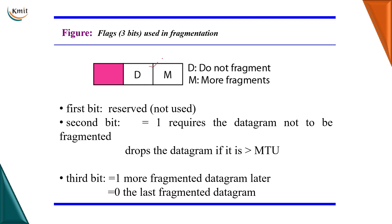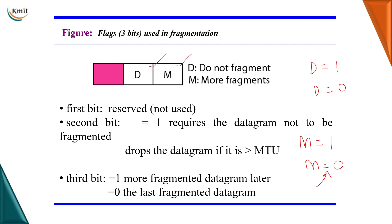The flags field is a 3-bit field. The first bit is unused; the other two are D and M. D means 'do not fragment' — if D is 1, the datagram must not be fragmented; if 0, it can be fragmented. M means 'more fragments' — if M is 1, more fragments are yet to come; when M becomes 0, this is the last fragment of the datagram. This is used for synchronization at the receiver.